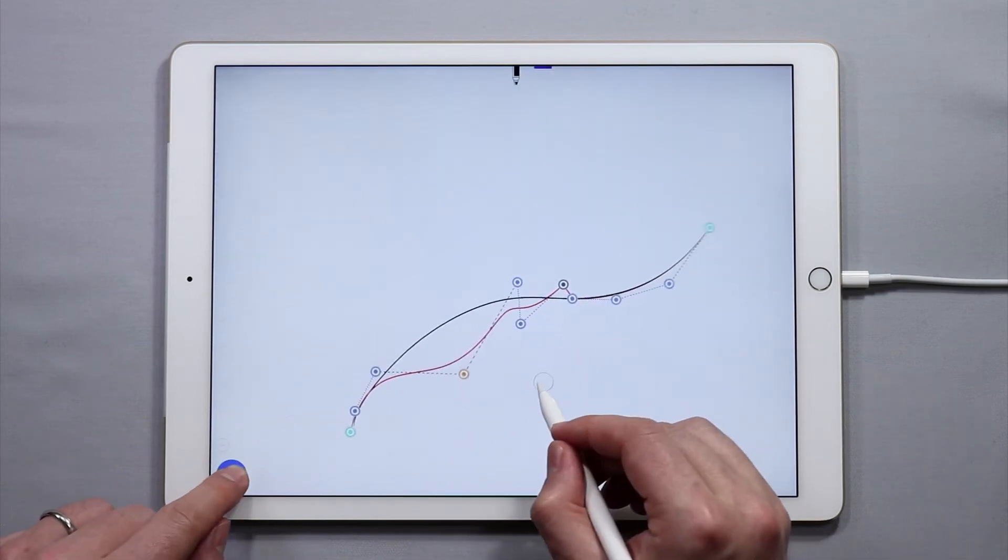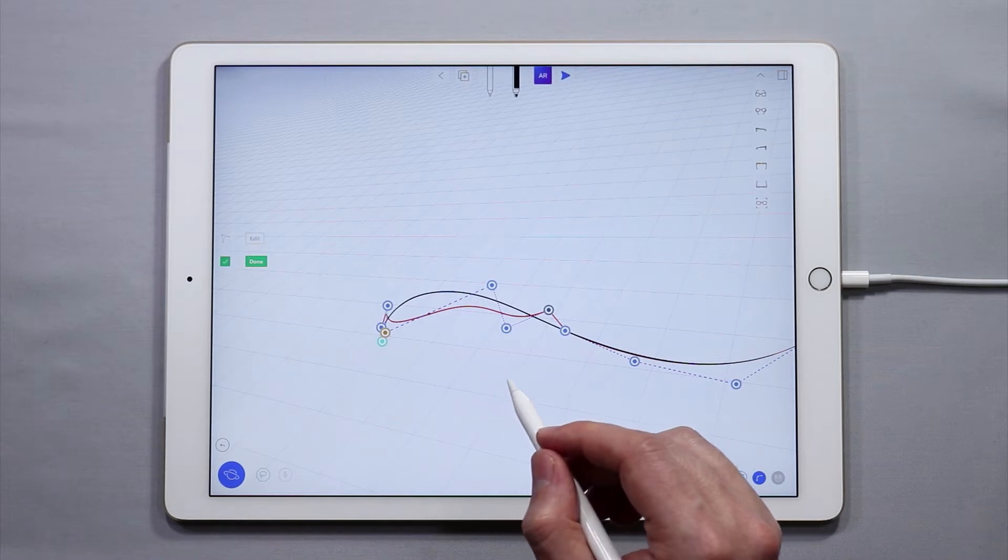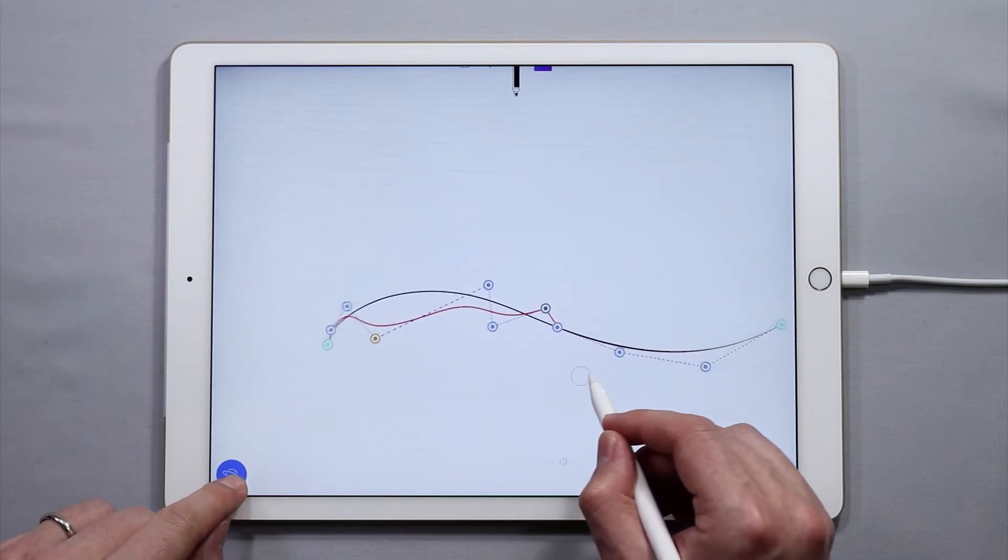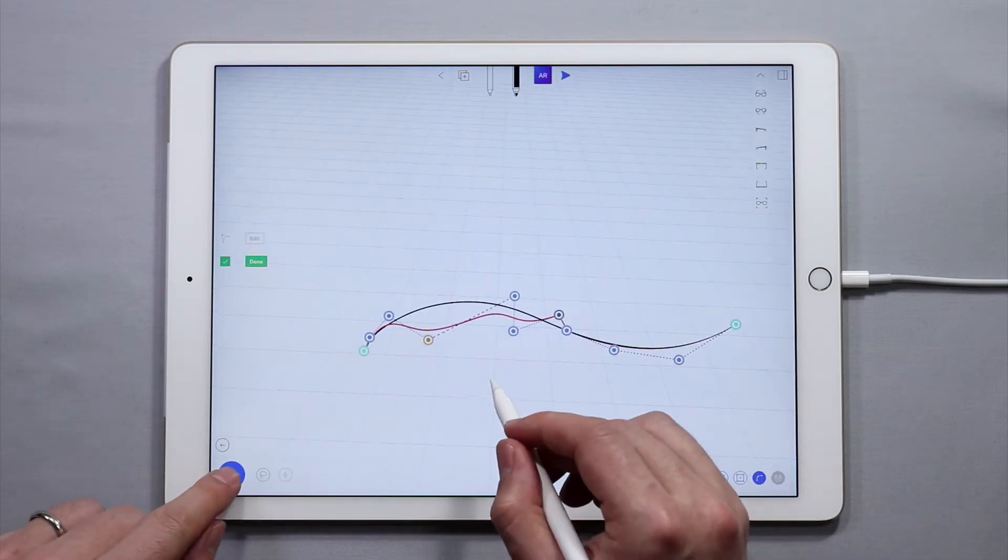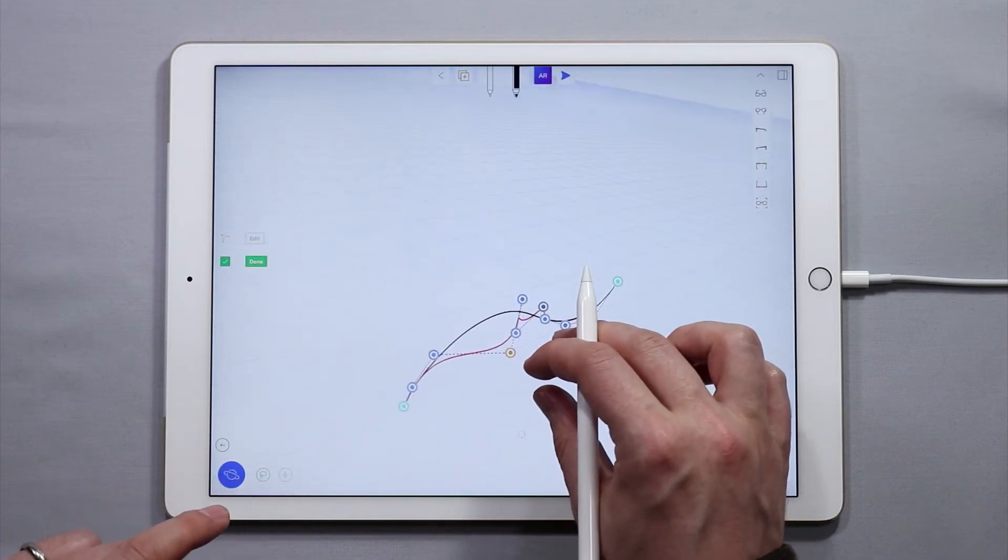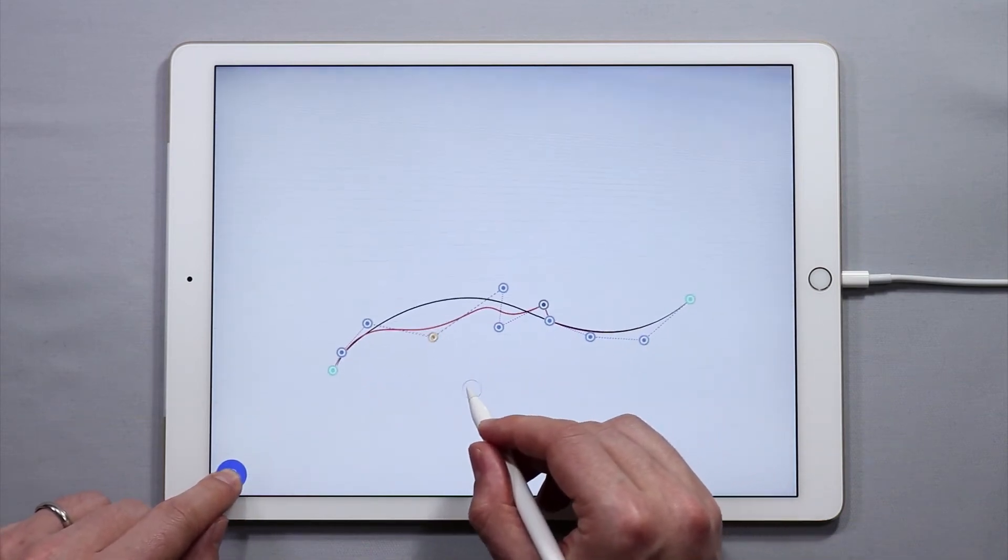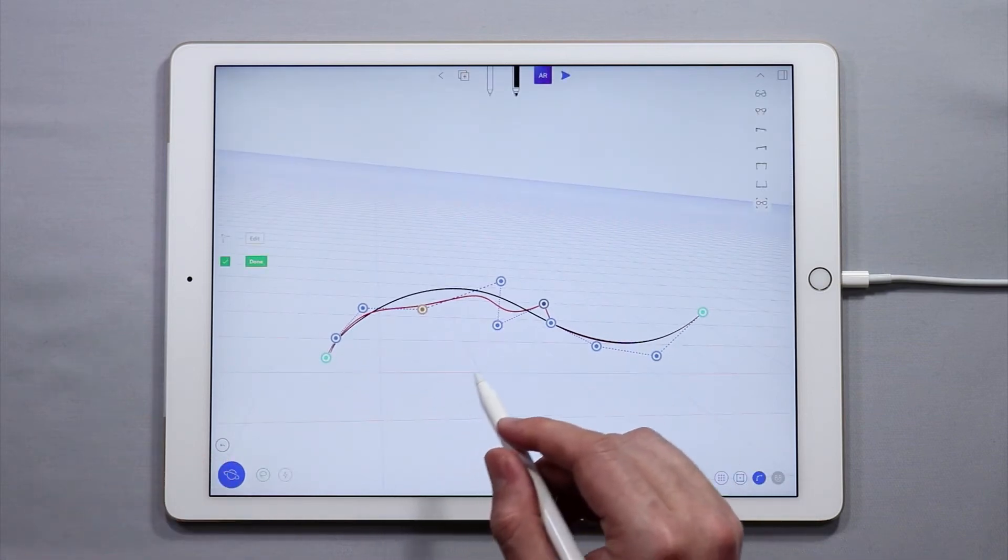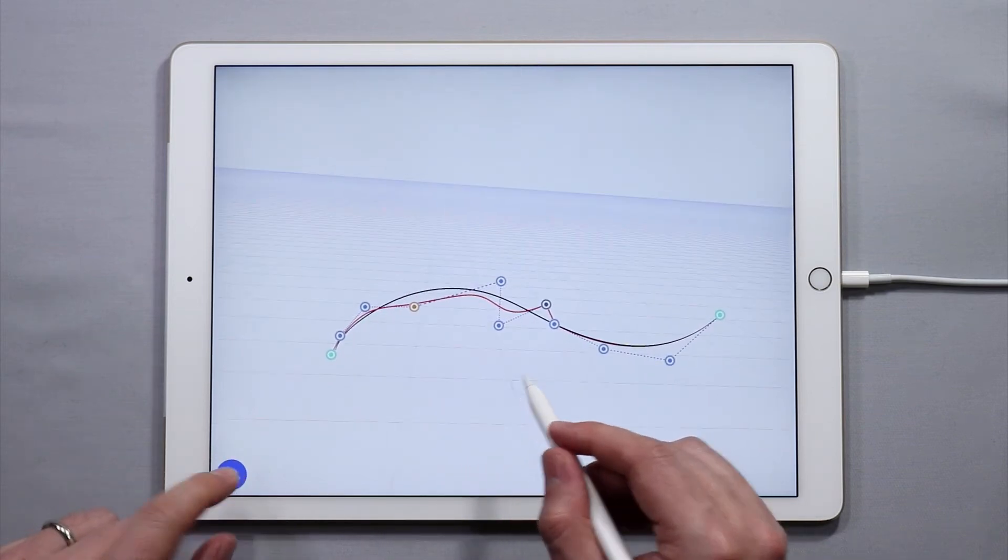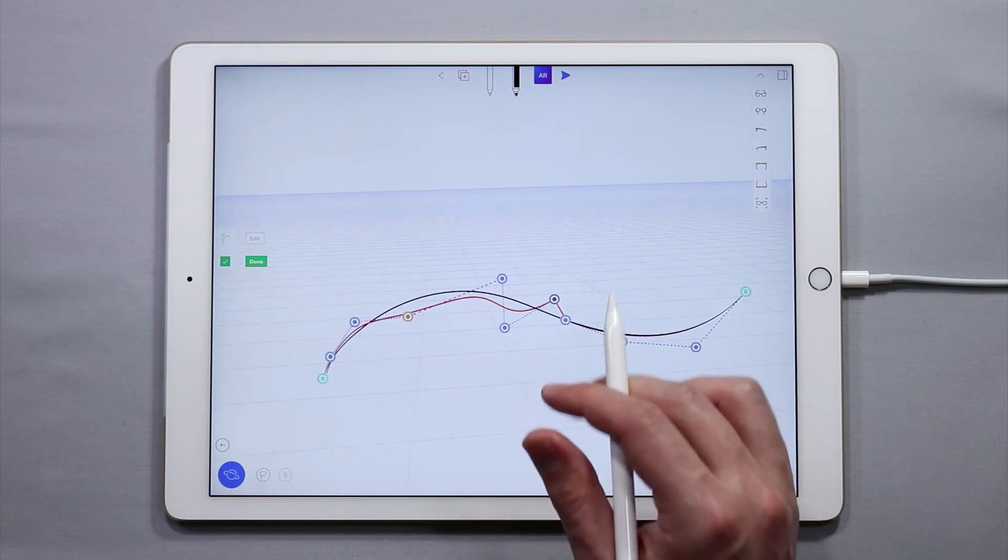This is a primary function of how you will model or sketch in 3D space in UMake. A lot of the time you will be moving these control points around so understanding how they work and how to move them and how to create new ones or delete them is very important. This will help you go a long way within UMake.